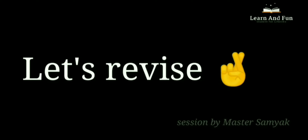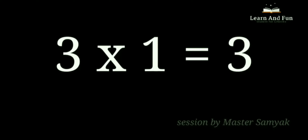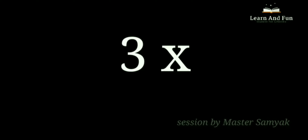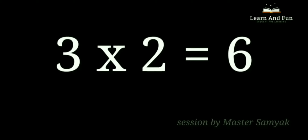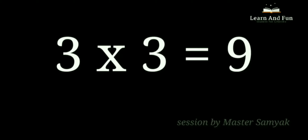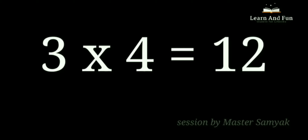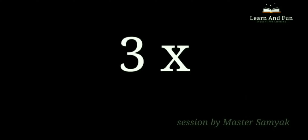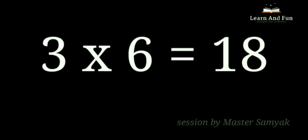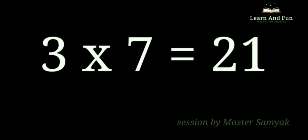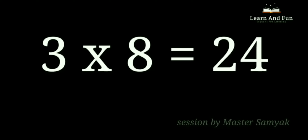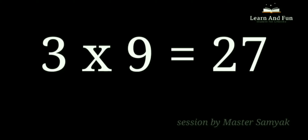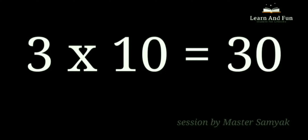Revise. 3 ones are 3. 3 twos are 6. 3 threes are 9. 3 fours are 12. 3 fives are 15. 3 sixes are 18. 3 sevens are 21. 3 eights are 24. 3 nines are 27. 3 tens are 30.